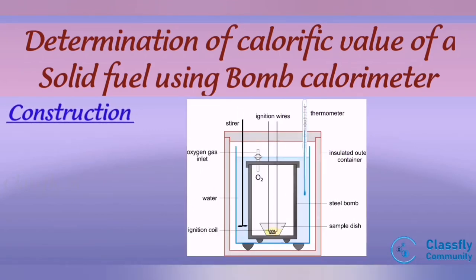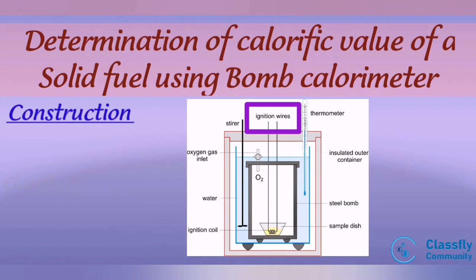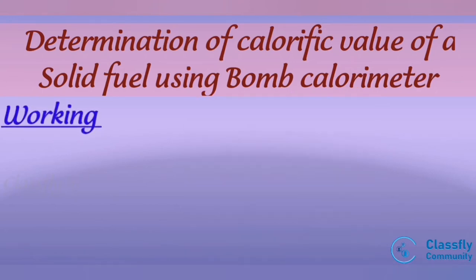Moving on to the construction: in this picture we can see the bomb calorimeter consists of a stainless steel vessel with an airtight lid — this vessel is called the bomb. The bomb has an inlet valve for providing oxygen atmosphere inside the bomb and an electrical ignition coil for starting combustion of fuel. The bomb is placed in an insulated copper calorimeter, which has a mechanical stirrer for dissipation of heat and a thermometer for reading the temperature.